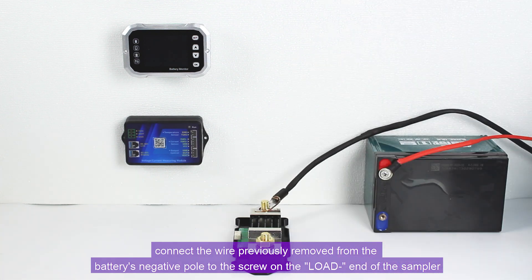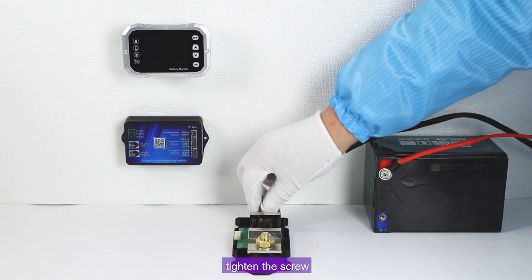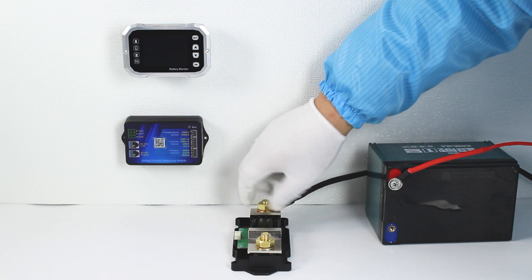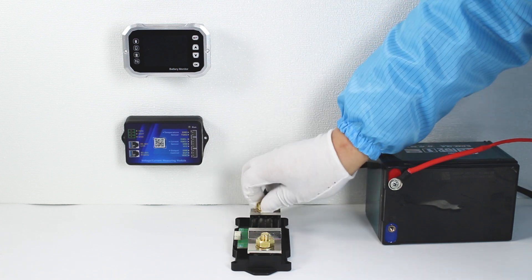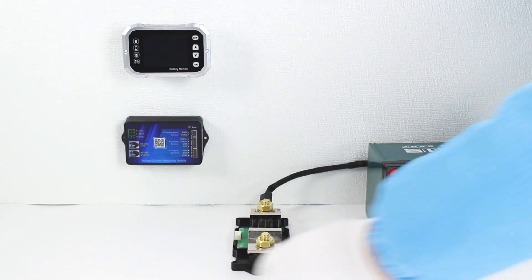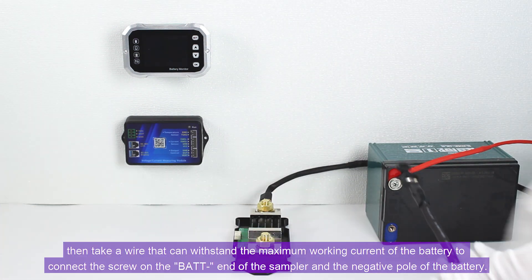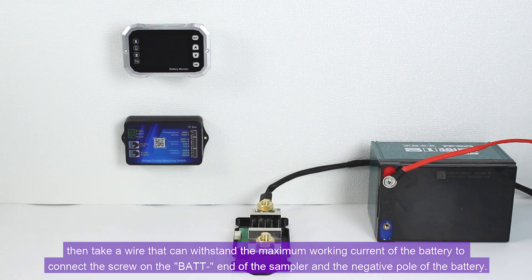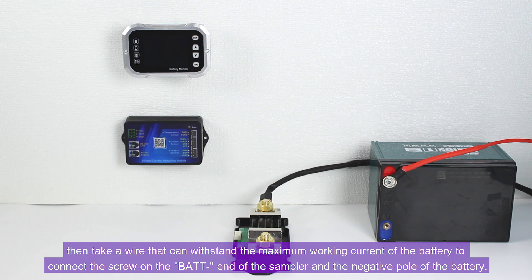Tighten the screw, then take a wire that can withstand the maximum working current of the battery to connect the screw on the BAT end of the sampler and the negative pole of the battery.